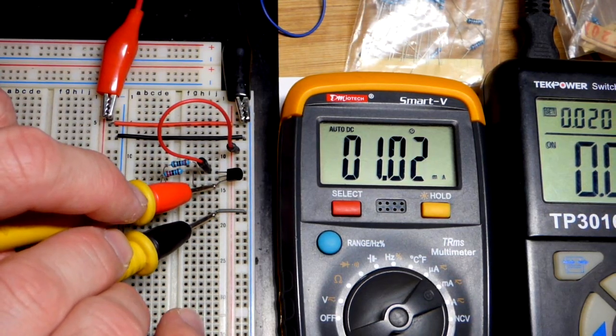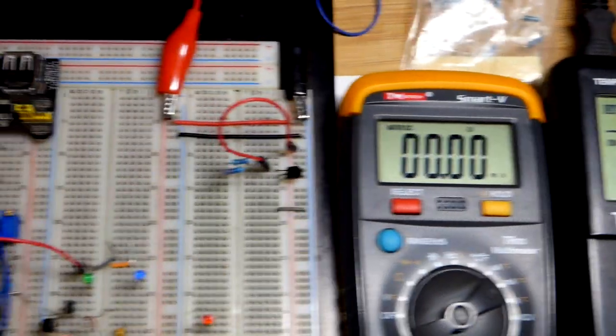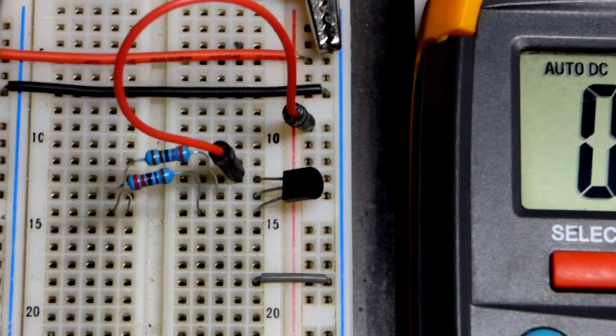But there you can see, we have the same current. It just went up a tiny bit, but it's pretty much still spot on. You can expect a little variation when you change the power needs of the transistor.